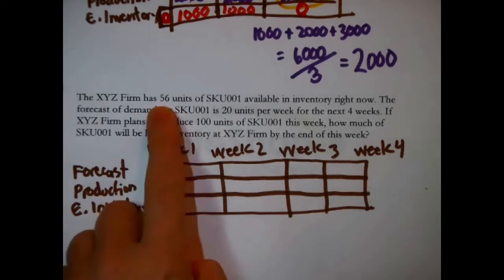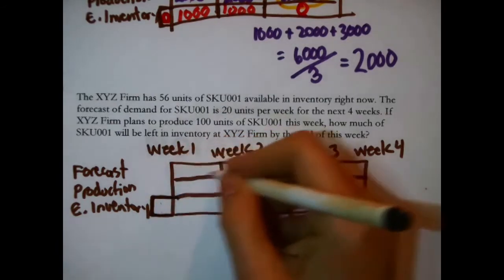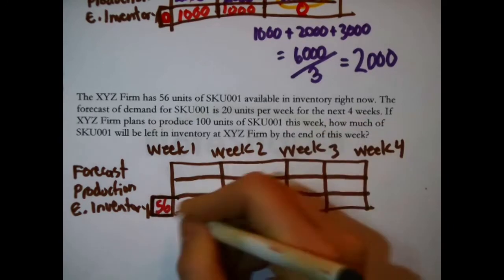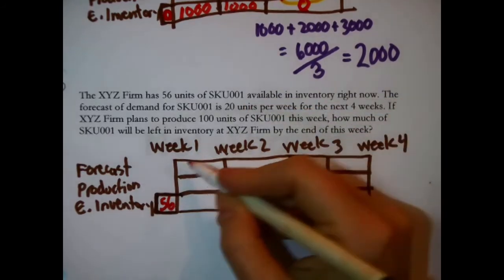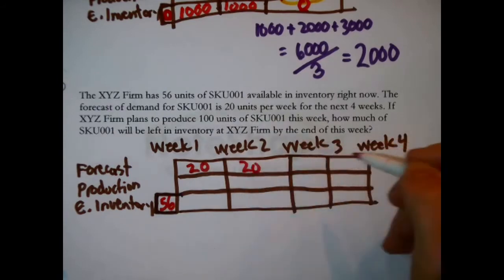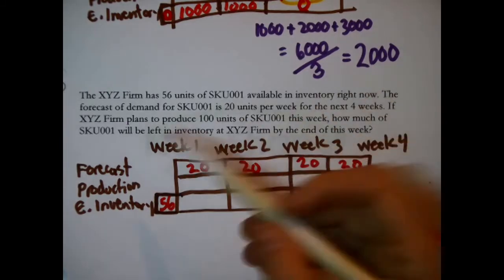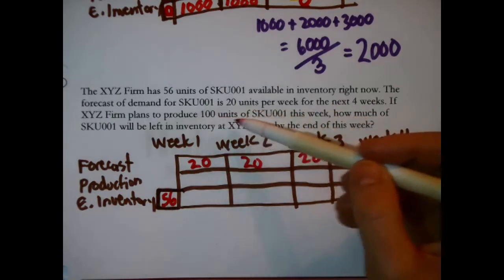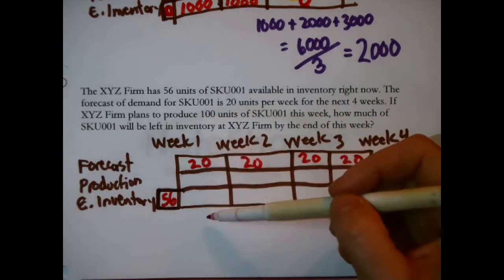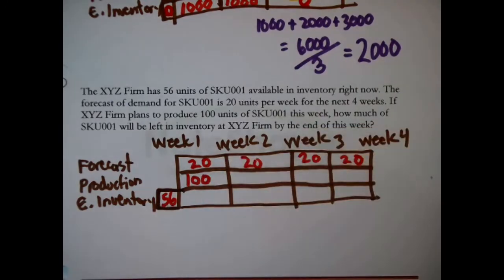I have to squeeze a 56 in here. The firm has 56 units of this SKU available right now. This is the right now part of the table, like before you start the columns. That's where you store facts like that. You have 56 right now going into this situation. The forecast for demand is 20 units a week for the next 4 weeks. That's where I got the 4 columns. That's week 1, this is week 2, this is week 3, and then this one's week 4. If the XYZ firm plans to produce 100 units of this SKU this week—100 units of production this week. This week is this first week, week 1, this upcoming week. That 100, that's their plan, belongs right there. How much of the SKU will be left in inventory by the end of this week?